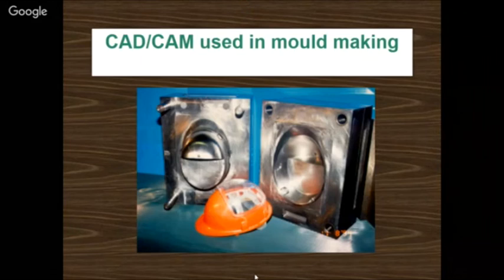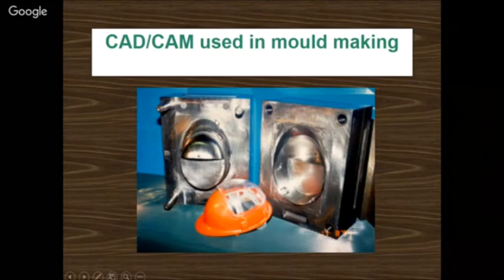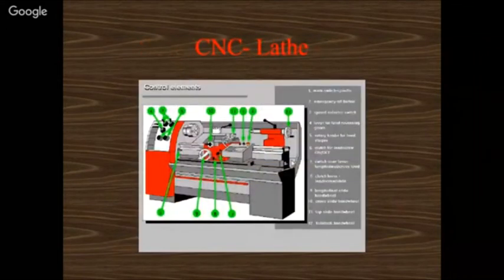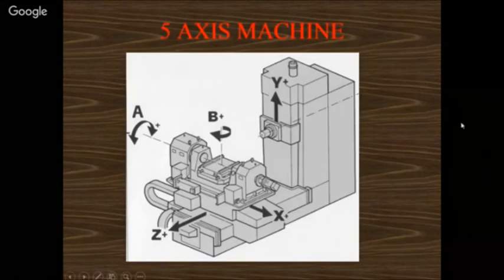CAD CAM is used in mold making: injection mold dies for helmet products, where the dies are machined using CAD CAM software — upper die and lower die with the impression cavity visible. A CMM (Coordinate Measuring Machine) is also shown. CNC lathe (CNC turning machine) is shown as a 5-axis machine with X, Y, Z as three linear axes, and A (rotating along X-axis) and B (rotating along Y-axis) as two rotational axes.